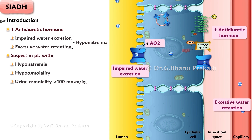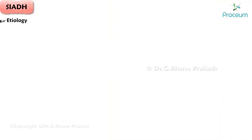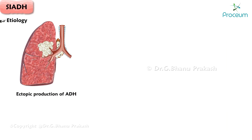100 milliosmoles per kilogram. In SIADH, the urine sodium concentration is usually above 40 milliequivalents per liter. The serum potassium concentration is normal, there is no acid-base disturbance, and the serum uric acid concentration is frequently low.